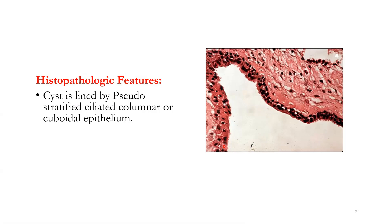If the cyst is close to the maxillary sinus or in proximity with it, it shows pseudostratified ciliated columnar epithelium. But if it is closer to the oral cavity, it resembles oral cavity epithelium — that is, stratified squamous epithelium or cuboidal epithelium. That is the histopathology applicable to all of these non-odontogenic cysts.